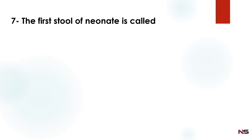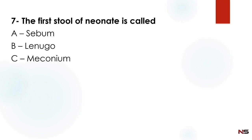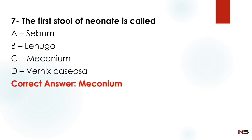Next question: The first stool of a neonate is called — Option A: sebum. Option B: lanugo. Option C: meconium. Option D: vernix caseosa. The correct answer is Option C — meconium. Meconium is the first stool of a neonate.